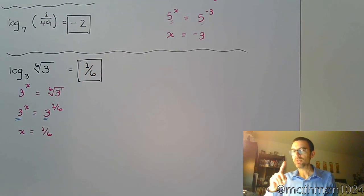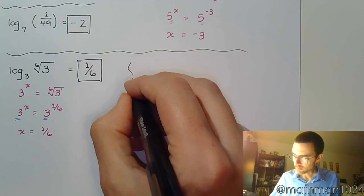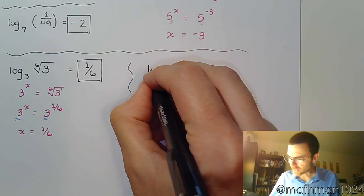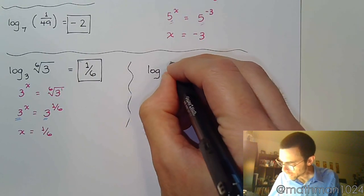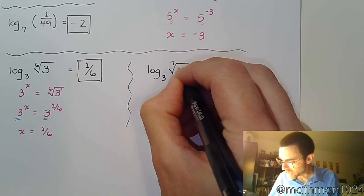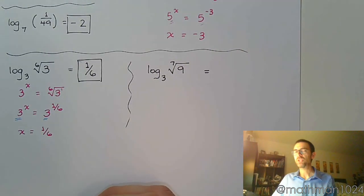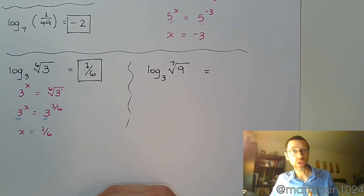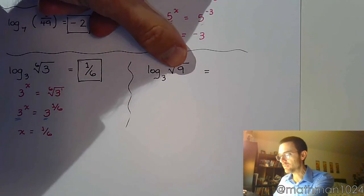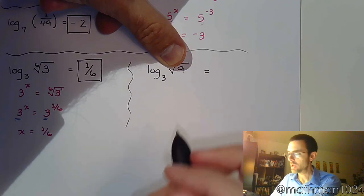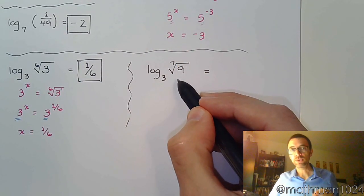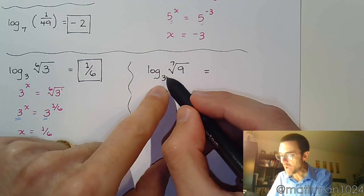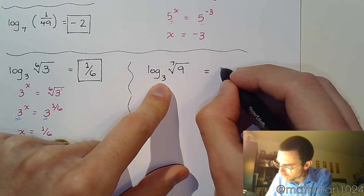Now, let me do an additional one. Still based off of this same kind of concept here, if I do log base 3 of the 7th root of 9, let's see what happens here, see if we can find a shortcut way of doing this, right? So if I don't have the 7th, if I don't have the root there, what's the power of 3 that gives you 9? Because remember, the answer to the log is the power. So what power of 3 gives you 9? You know the answer is 2.